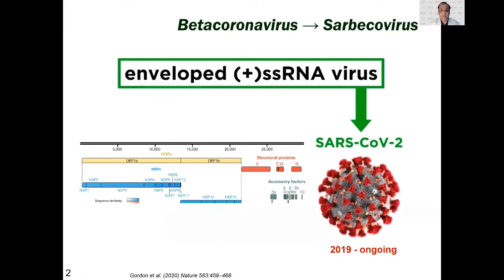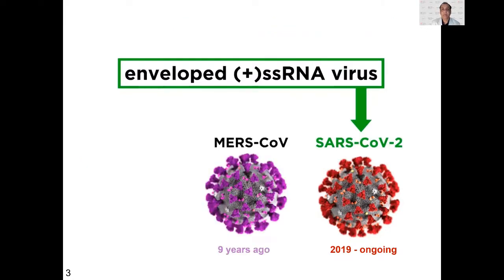SARS-CoV-2 is a single-stranded RNA virus — a positive-sense virus that contains a number of proteins, most notably the spike protein shown here with an 'S'. SARS-CoV-2 was first detected in 2019 in the Wuhan area. It belongs to a family of coronaviruses, some of which we know a lot about — for example, MERS, which nearly caused a pandemic nine years ago.